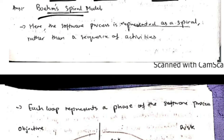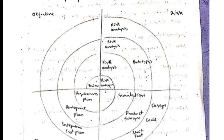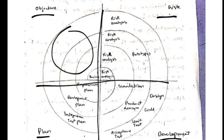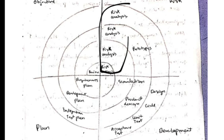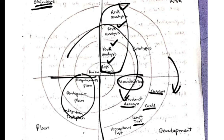In the Boehm spiral model, the software process is represented as a spiral, not a sequence of activities — each activity is repeated in a loop. The diagram has four parts: objective, risk, development, and plan. In the objective part, you define the product's objective; in risk, you carry out risk analysis for each part; in development, you design, code, and test the product; and in the plan phase, you plan for the next loop.